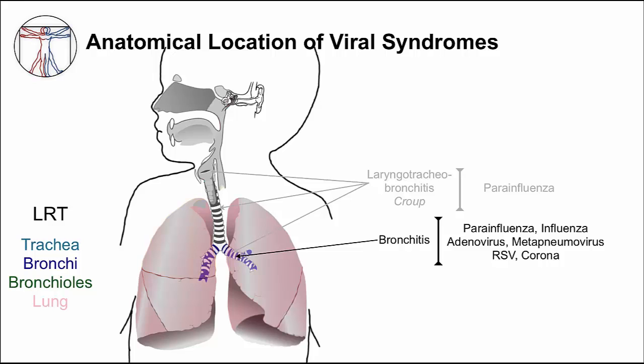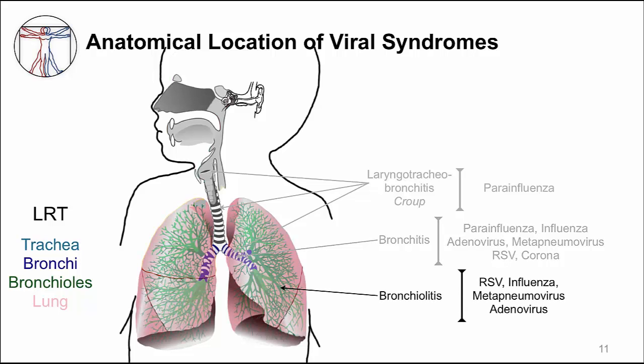The bronchi branch off into smaller airways called bronchioles. An infection of bronchioles is called bronchiolitis, which is clinically more severe in infants and young children. The size of the bronchioles in infants and young children are smaller compared to adults, and thus it's easier to block up with all the mucus and cellular debris. Most of the respiratory viruses can also cause this clinical syndrome, but RSV, which is short for respiratory syncytial virus, is the typical virus for bronchiolitis.